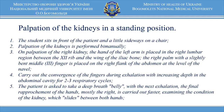Palpation of the kidneys in a standing position. The student sits in front of the patient and a little sideways on a chair. Palpation of the kidneys is performed bimanually. On palpation of the right kidney, the hand of the left arm is placed in the right lumbar region between the twelfth rib and the wing of the iliac bone. The right palm with the slightly bent middle finger is placed on the right flank of the abdomen at the level of the navel.